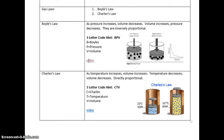Next, let's talk about Charles' Law. Charles' Law says that as the temperature increases, our volume also increases — or if our temperature decreases, our volume decreases. We say they're directly proportional, meaning if one goes up, the other goes up; if one goes down, the other goes down. The three-letter code to help you remember Charles' Law is CTV: C stands for Charles, T stands for temperature, V stands for volume.